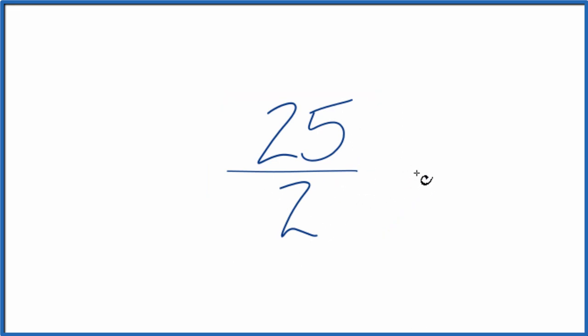What we want to do is find another fraction that's equivalent. It has the same value, it's just that we've simplified it or put it in lowest terms. But the thing is, we can't find a common factor, the greatest common factor, going into 25 and 2. The only thing that goes into both 25 and 2 evenly is 1.